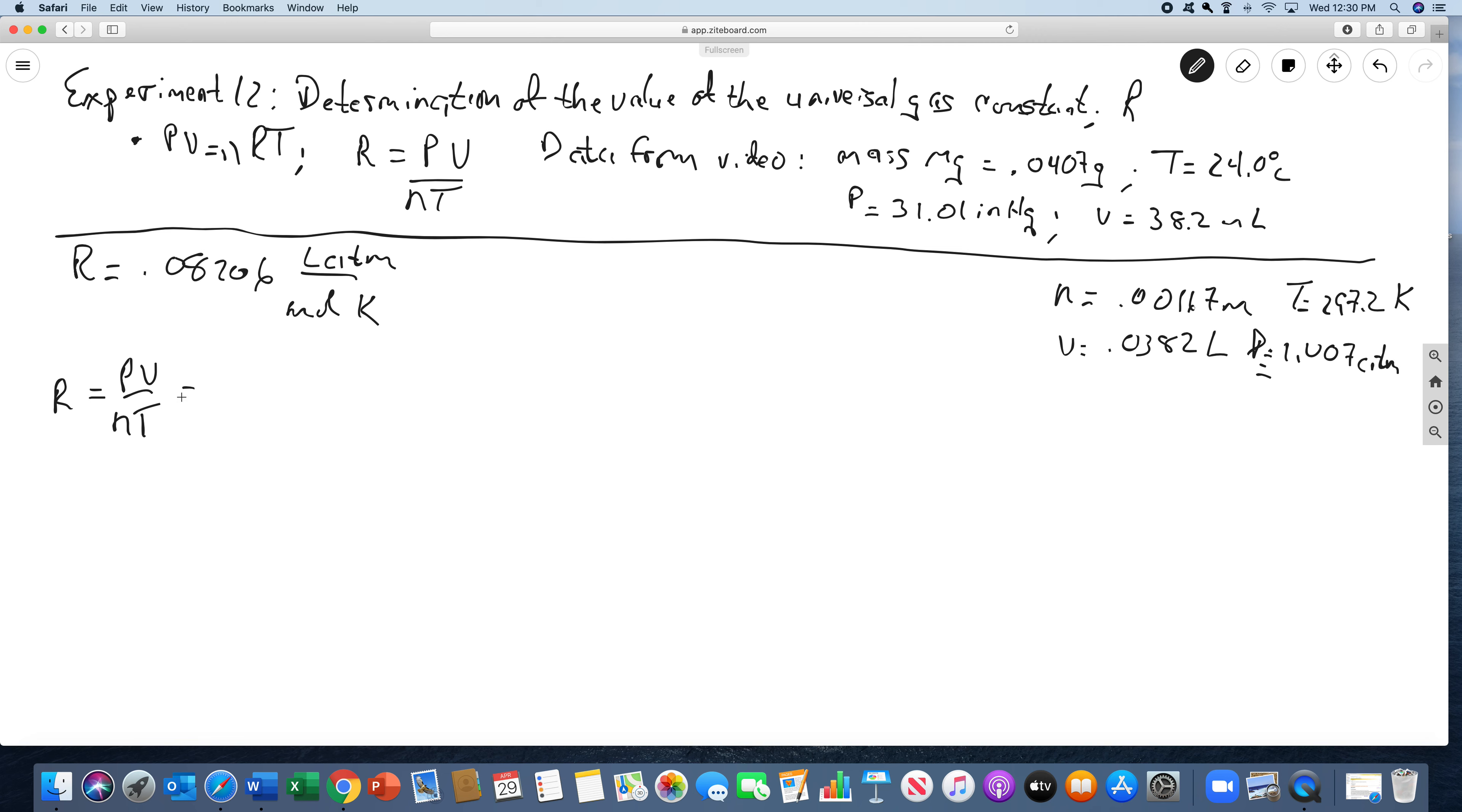Now our value is PV over nT. Let's see how close we got: 1.007 atmospheres, 0.0382 liters. Number of moles is 0.00167 moles, and the temperature is 297.2 Kelvin. So that means our experimental value of R is 0.0775 liters atmospheres per mole Kelvin.